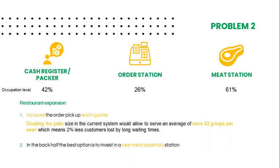In the second and last problem, we were presented with two options for each half of the restaurant: either expand the patio or add another cash register, and either acquire a new station or a new piece of equipment. In the front half of the restaurant, we chose to increase the order pick-up waiting zone, because even though the cash register also does the handoff, it is still free for more than half of the time and doesn't represent a bottleneck. Doubling the patio size in the current system would allow serving an average of 62 more groups per week, meaning 2% fewer lost customers due to long waiting times. In the back half, the best option is to invest in a new meat assembly station. With this new piece of equipment, we could decrease the order delivery time to 4.7 minutes, which would mean an overall increase in customer satisfaction level, even without optimizing the stocks.